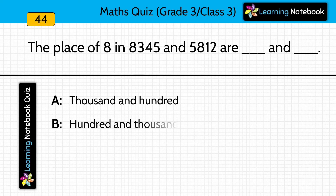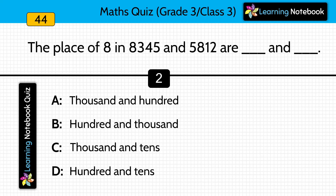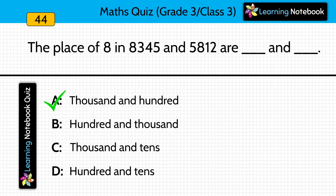The place of 8 in 8,345 and 5,812 are dash and dash. You have to tell the place of 8 in both these numbers. Answer is 1000 and 100. The place of 8 in 8,345 is 1000, and the place of 8 in 5,812 is 100. So the answer is option A.